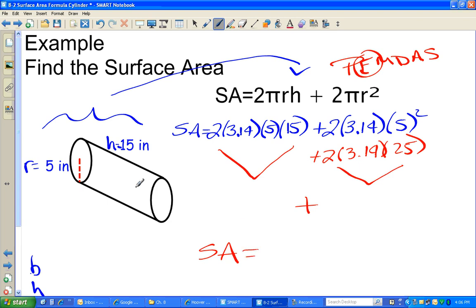So let me plug this in the calculator. 2 times 3.14 times 5 times 15. I get 471. Now 2 times 3.14 times 25. And I get 157.